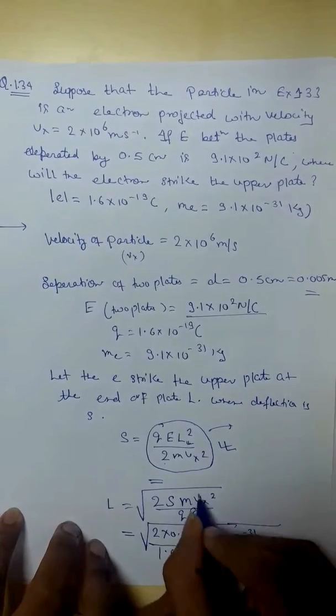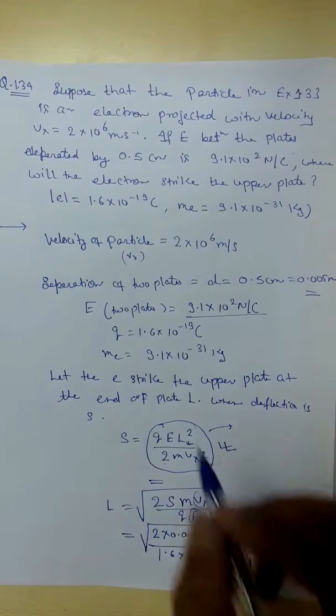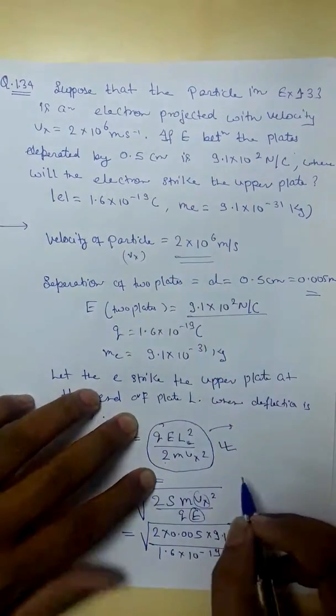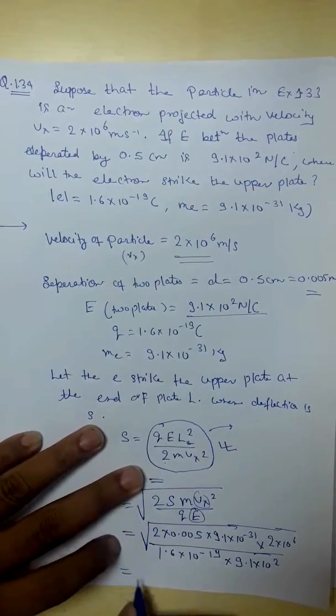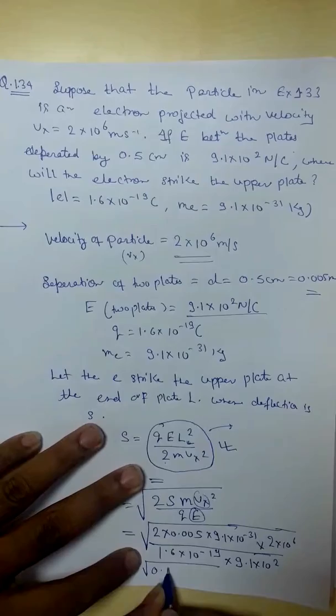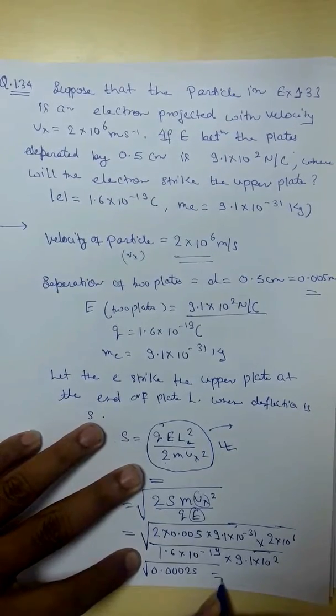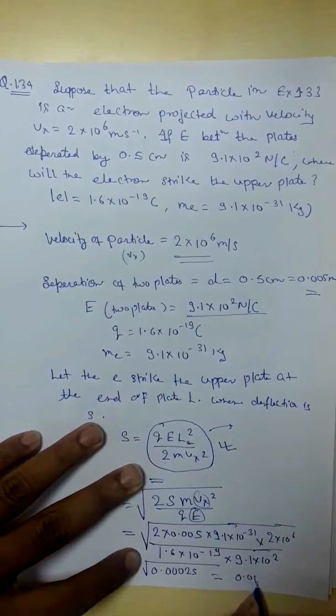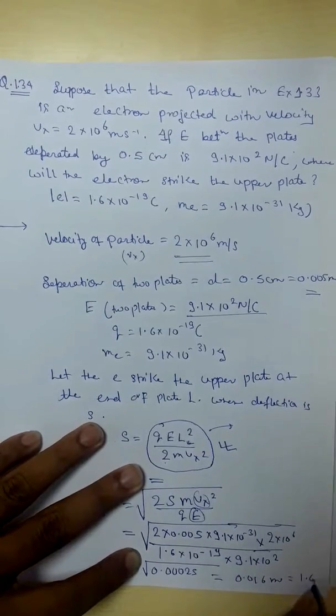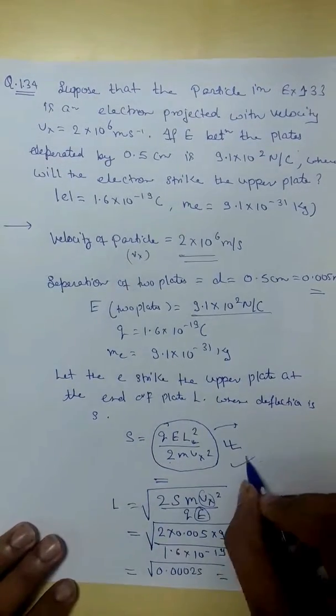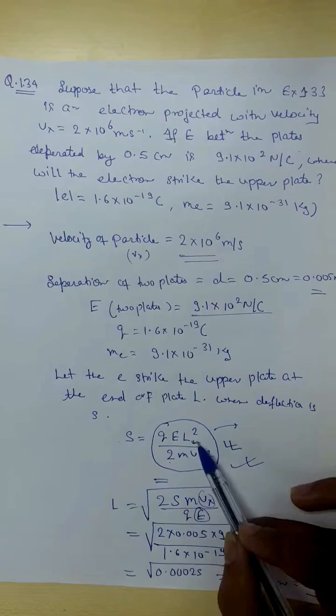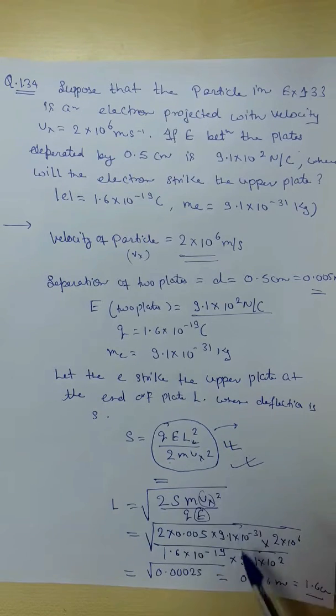So you can write 2 into 10 to power 6. Now if we solve this, we will get 0.00025 under root, which will give 0.016 meter or we can say 1.6 cm. I hope this is clear to you. We found the distance from the previous formula s is equal to u2 plus half a t square. From there we found L, put all the values one by one and solved it. Understand the previous question clearly.